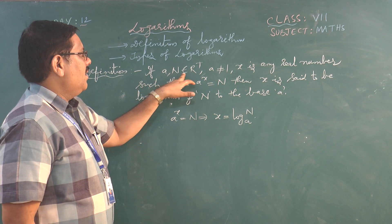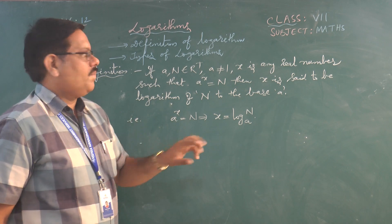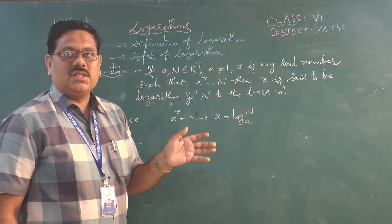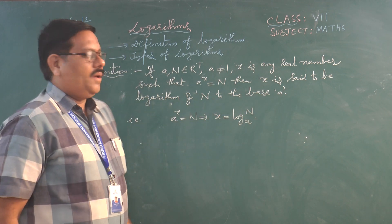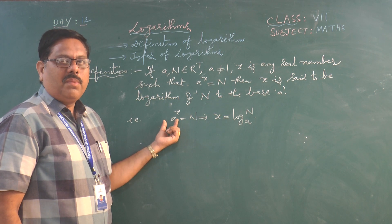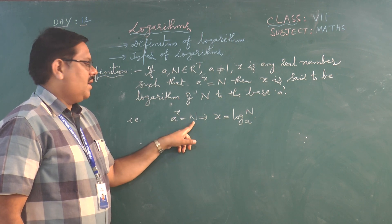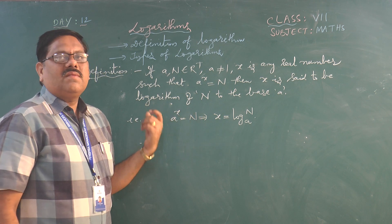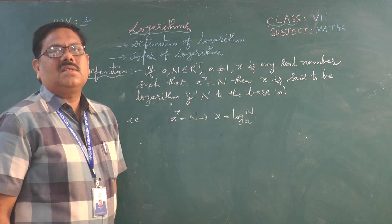If a and n belong to R+ (positive real numbers), with a not equal to 1, and x is any real number — x can be positive, negative, or even zero — such that a^x = n, then x is said to be the logarithm of n to the base a. In the exponential form a^x = n, a is the base, x is the exponent, and n is the value obtained. To find x we use: x = log_a(n), where n is the argument and a is the base.